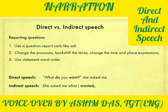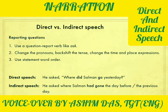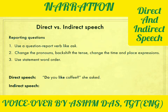Notice there is only a period at the end — a question mark after an indirect question is wrong. Next example: he asked, 'Where did Salman go yesterday?' We keep the question word 'where,' backshift simple past to past perfect, and put it in statement form: he asked where Salman had gone the day before, or the previous day. Also note that with 'ask,' you can use it with or without an object — 'she asked me' and 'he asked' are both correct.